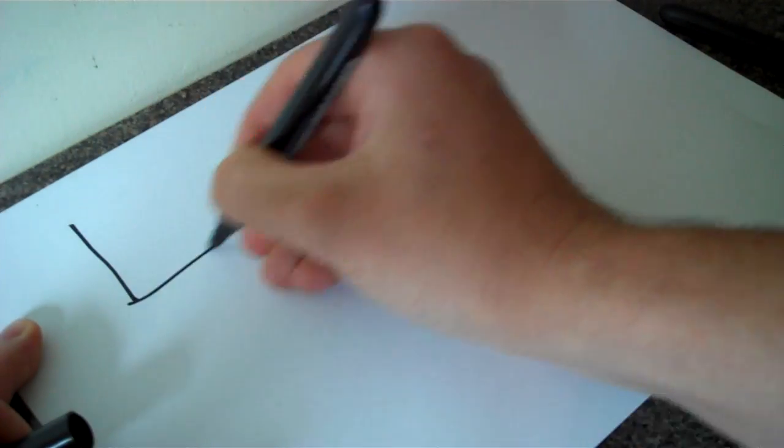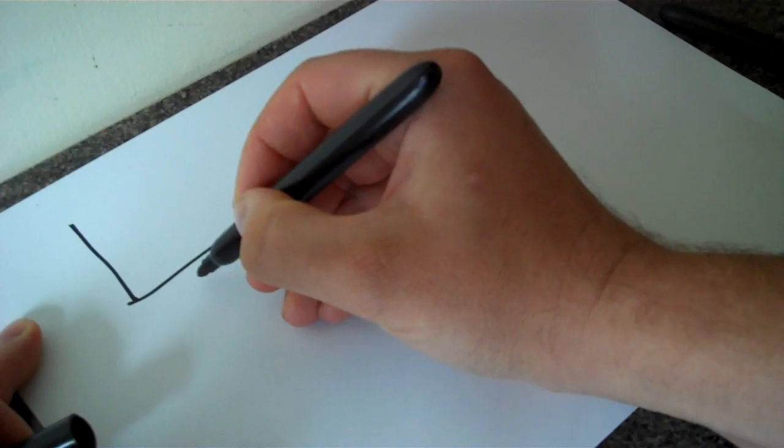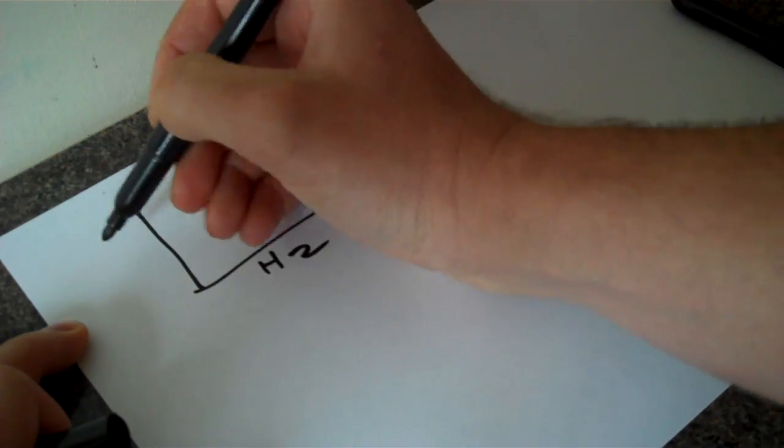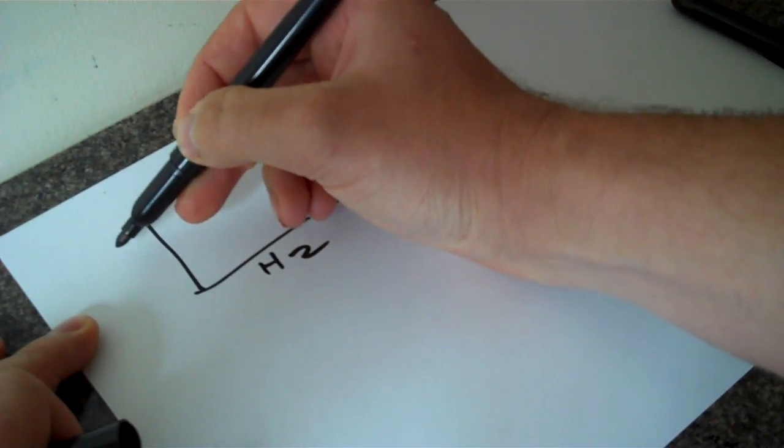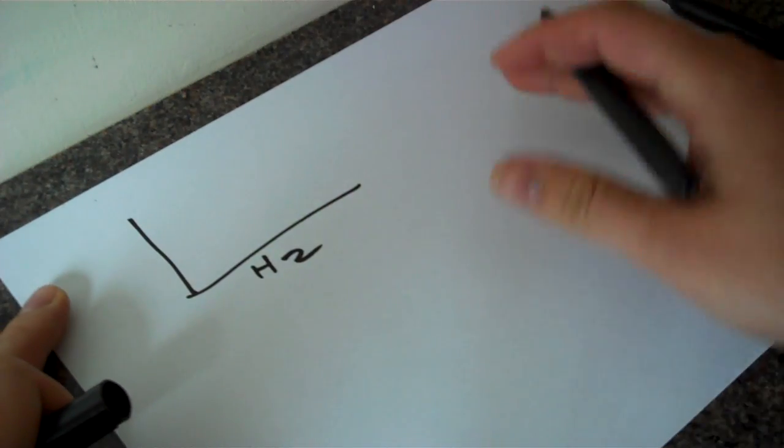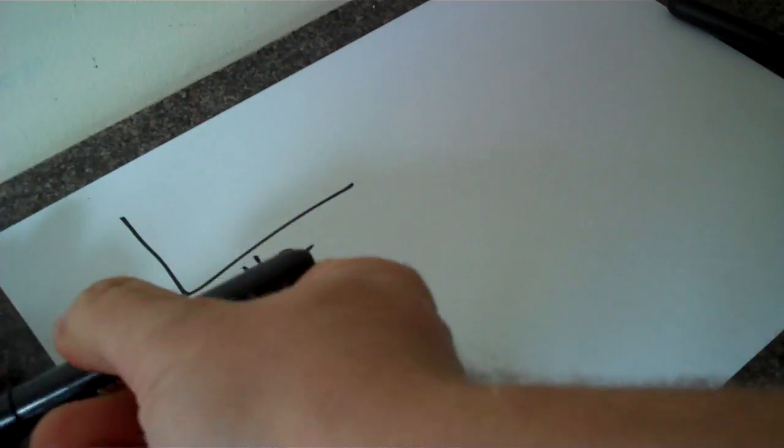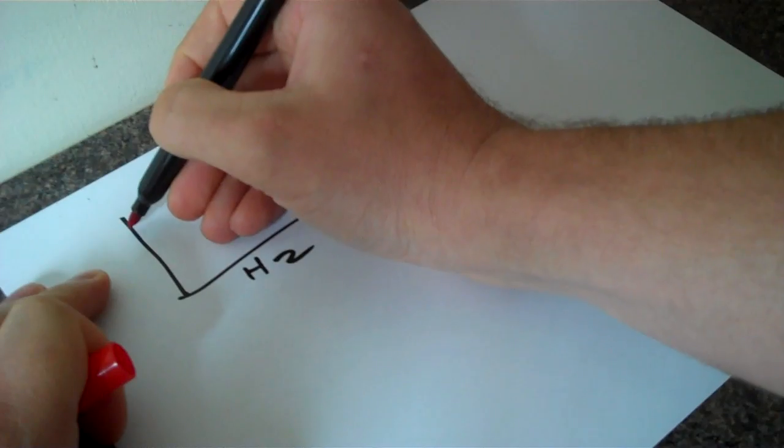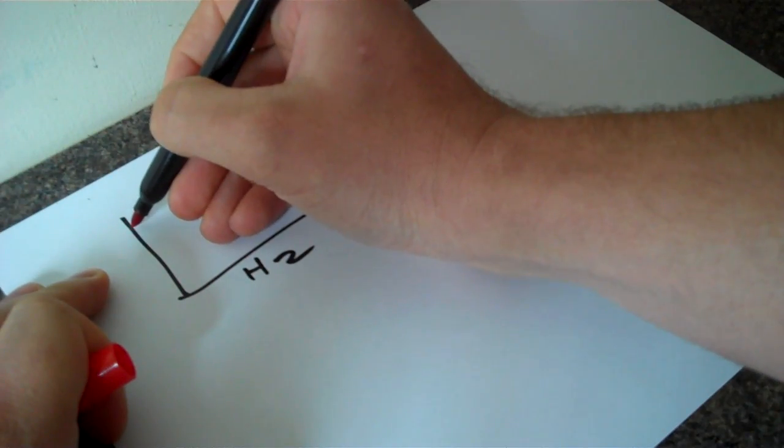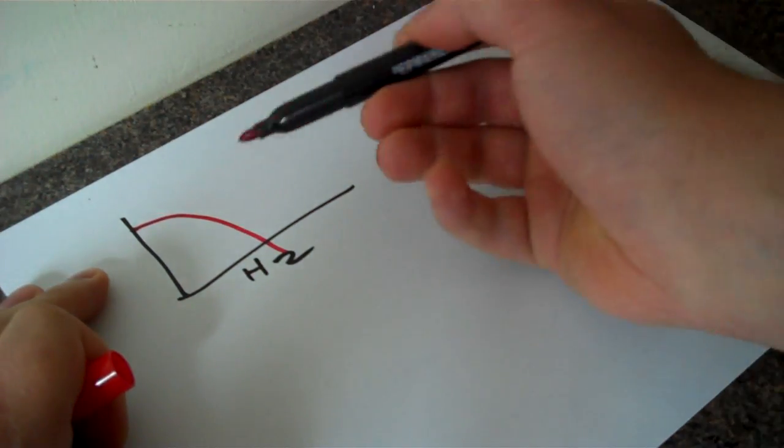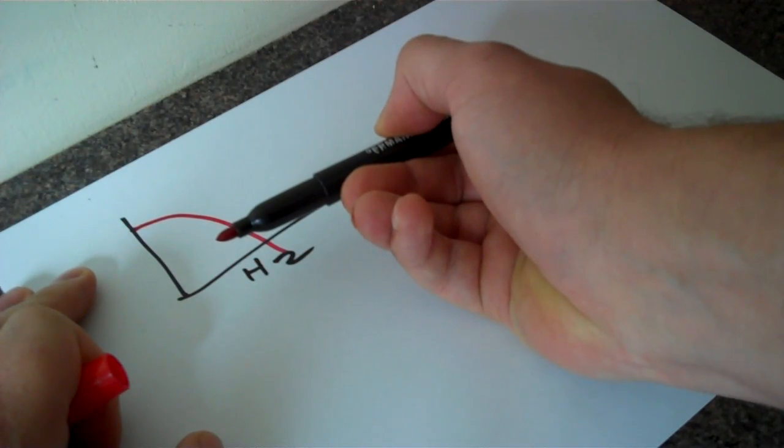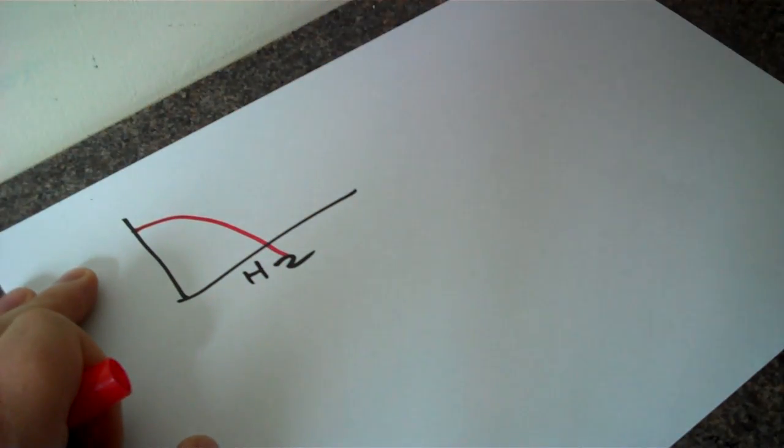So this is frequency on the bottom here, we'll call it hertz, and this is amplitude. If you have a subwoofer, you don't want it playing high frequencies, so you cross it over with what's known as a low-pass filter because you're allowing the low frequencies to pass through.